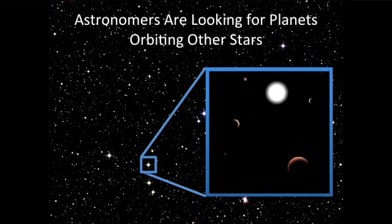If you were to try to take an actual image of a planet orbiting a star, that would be like trying to image a firefly right next to a searchlight. So we can't do this in most cases. We have to rely on indirect ways to find planets.